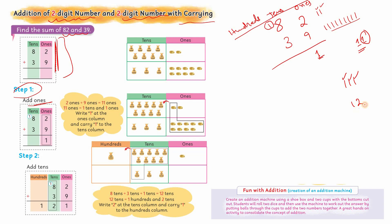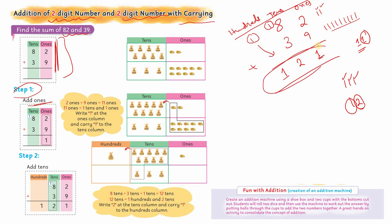جب بھی two digit number آئے تو right side والا وہاں لکھ لینا ہوتا ہے اور left side والا آگے carry کر لیتے ہیں۔ Tens place تھی، آگے carry کیا تو hundreds place پہ جائے گا۔ نیچے کوئی بھی number نہیں ہے، تو one plus zero ملیں گے: one۔ Answer کیا آ گیا؟ One hundred twenty-one۔